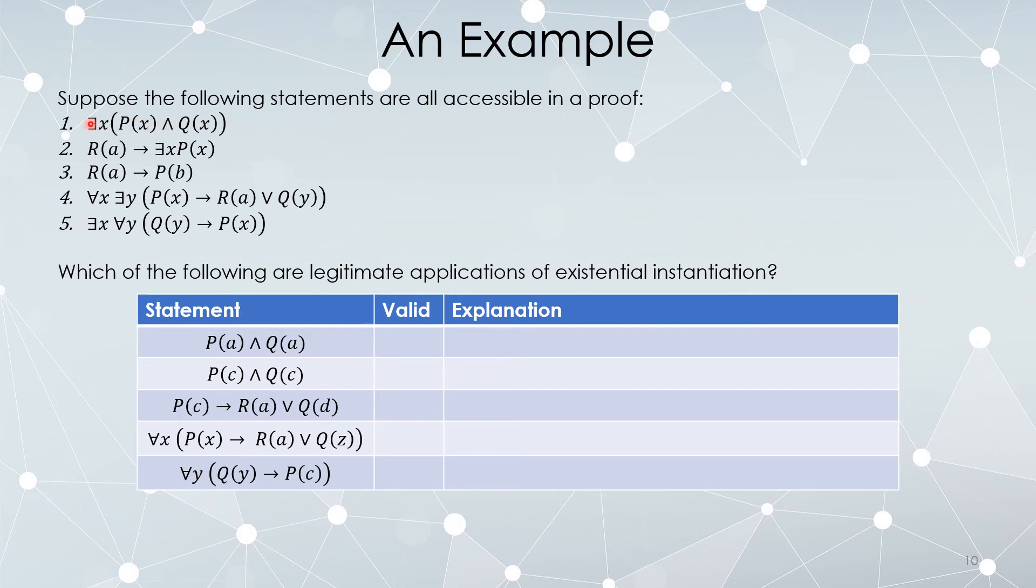So P(a) and Q(a) appears to be coming from this. Can I do an existential instantiation using the variable a? No, because a exists as a free variable in statements that are already out on the board. P(c) and Q(c), however, can be written. I have an existential statement so I can instantiate it using a new variable and c doesn't appear anywhere else.